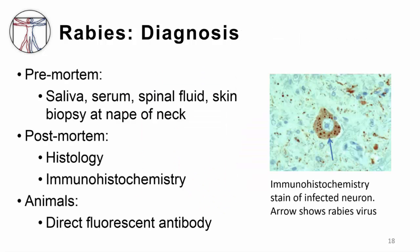If you suspect your patient has rabies, pre-mortem, saliva can be tested by viral isolation in culture or by RT-PCR. Serum and spinal fluid can be tested for antibodies to the rabies virus. A skin biopsy at the nape of the neck is examined for rabies antigens in the hair follicles. Post-mortem, the diagnosis is made by histologic and immunohistochemistry examination of brain tissue — the slide shows an arrow indicating the rabies virus in a neuron. Animals undergo histology and direct fluorescent antibody tests of their brains.